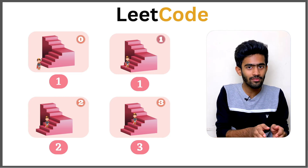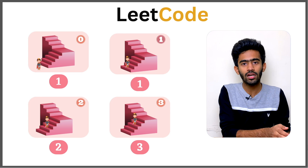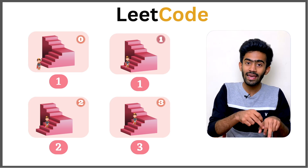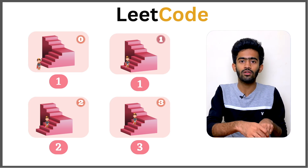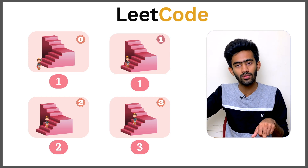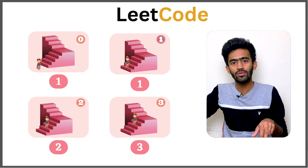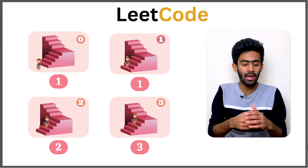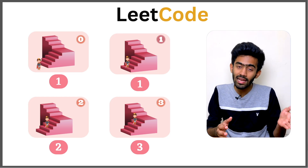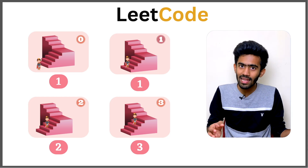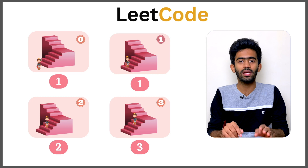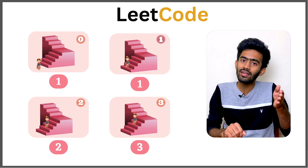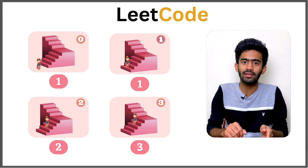So the number of ways to reach n is f(n-1) — the number of ways from n-1 with one step — plus f(n-2) — the number of ways from n-2 with two steps.